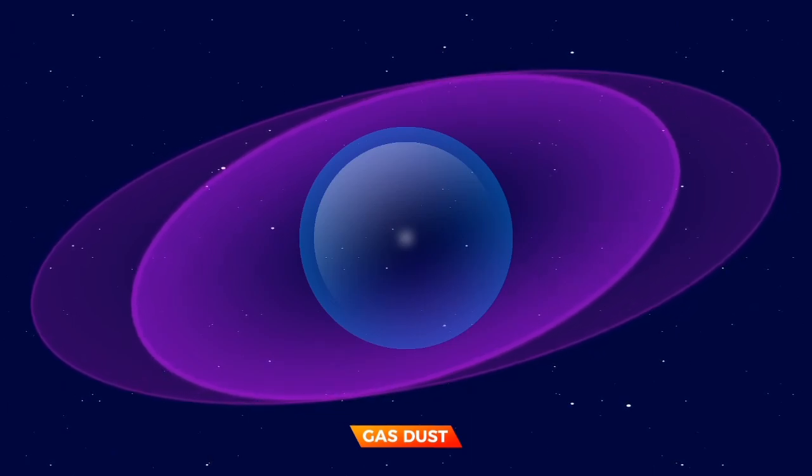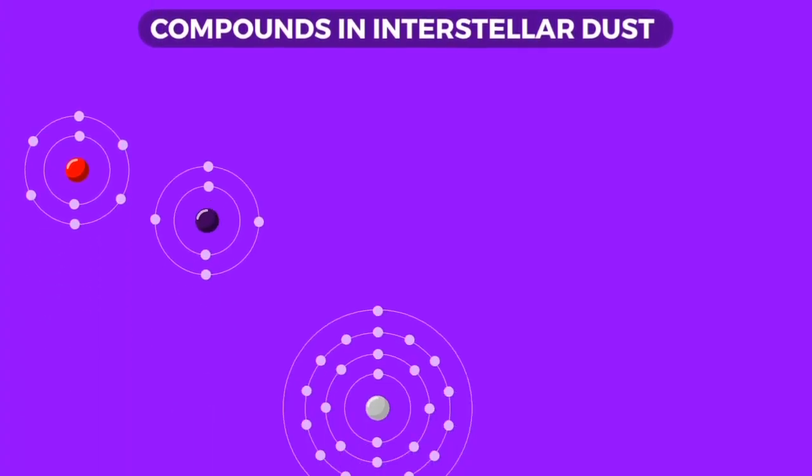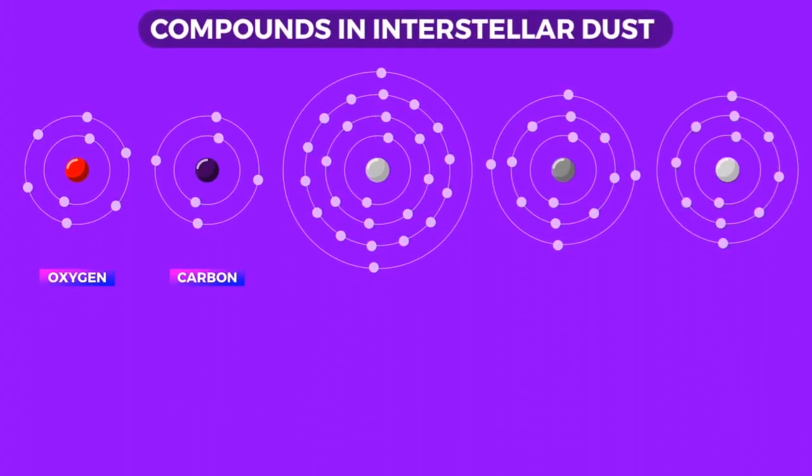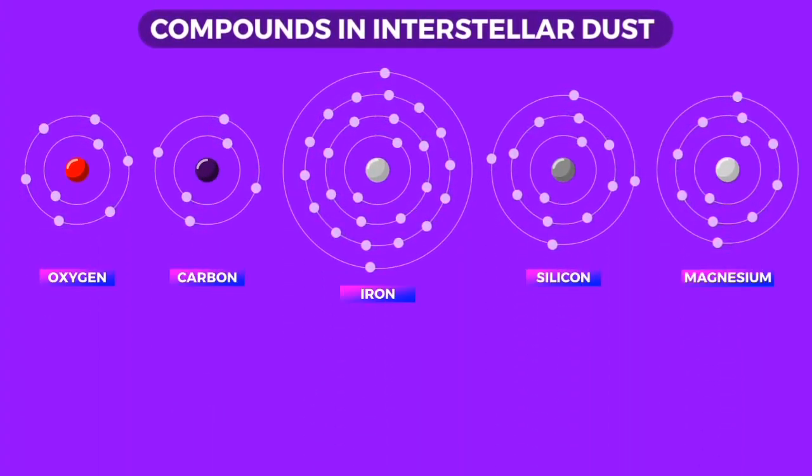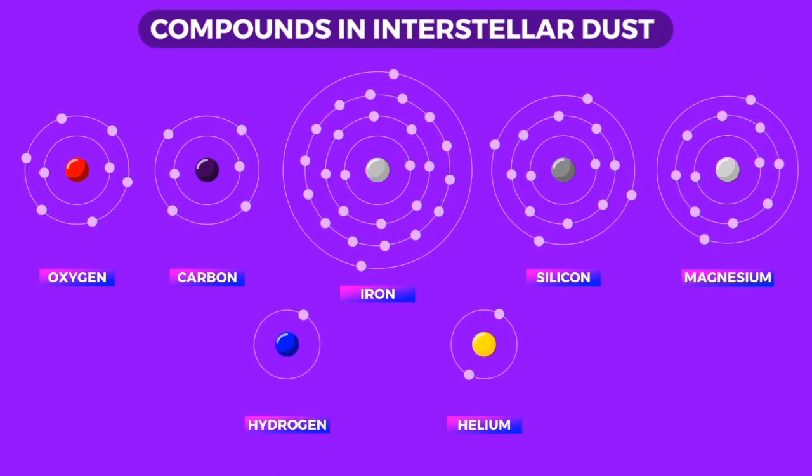Well, the journey begins with gas dust, especially known as interstellar dust. It is made of compounds of various elements such as oxygen, carbon, iron, silicon and magnesium. While hydrogen and helium make up most of the gases in interstellar space.